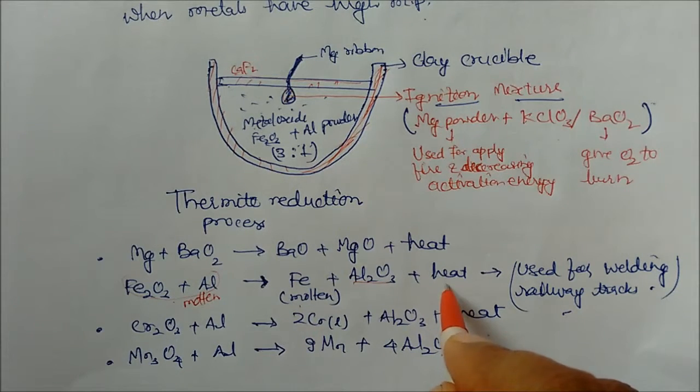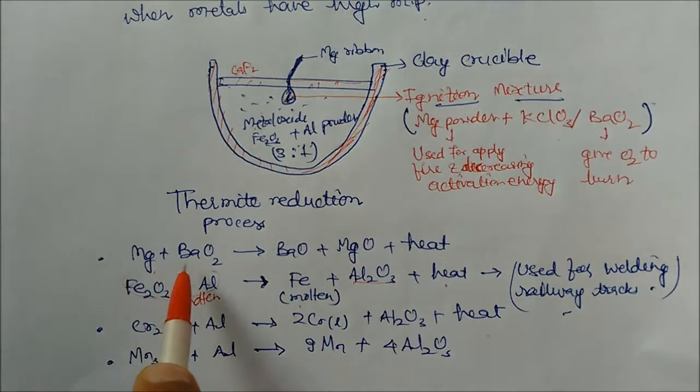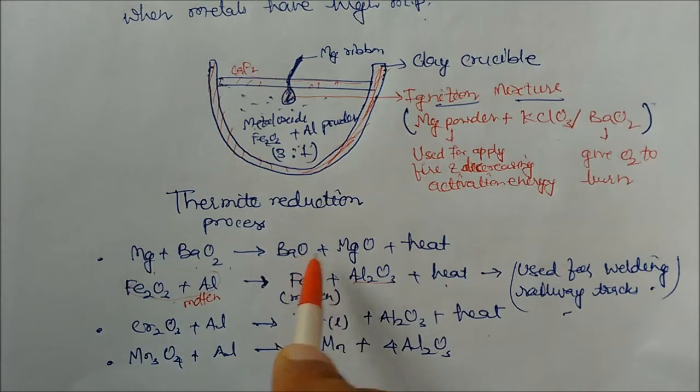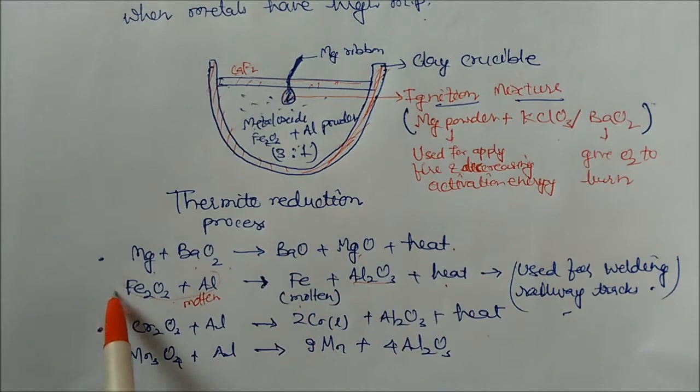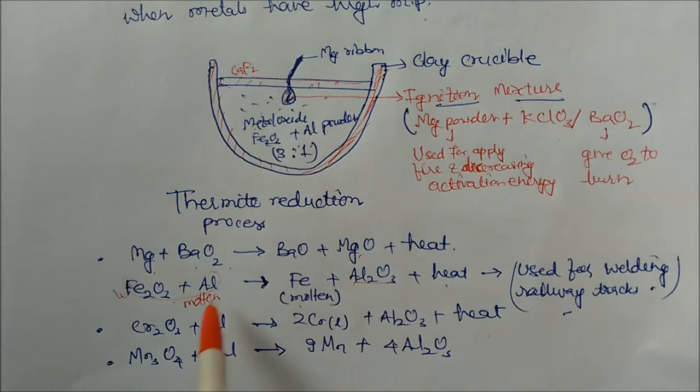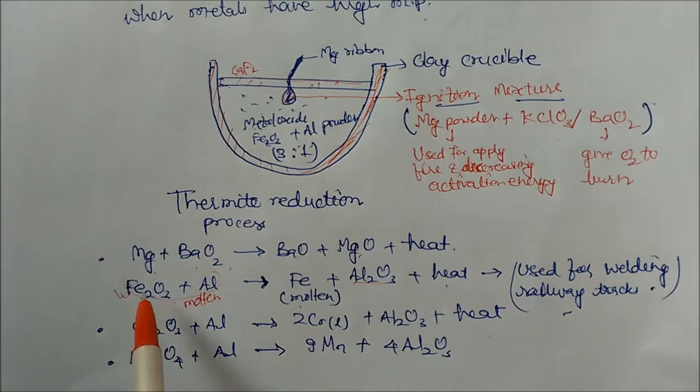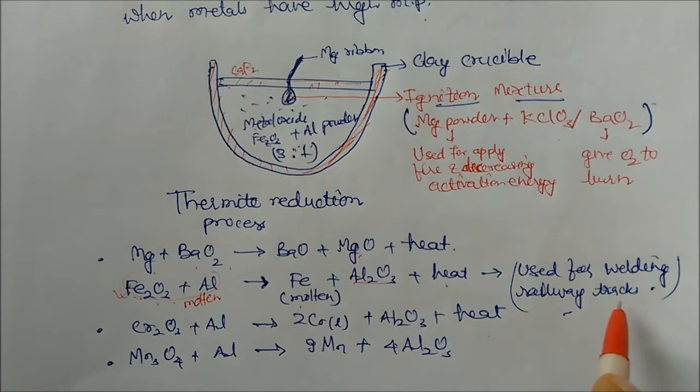It will form Al2O3 and iron plus large amount of heat is produced. You can see the magnesium react with the barium peroxide. They will give you barium oxide, magnesium oxide and large amount of heat. So this process is used for welding railway tracks.